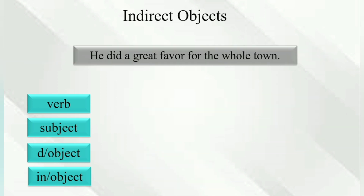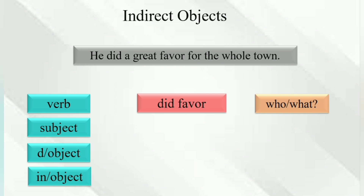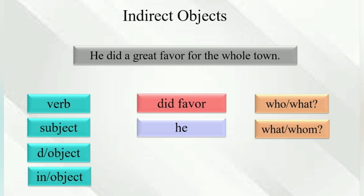'He did a great favor for the whole town.' The verb is 'did favor.' Who did favor? He. Did favor for what or whom? There isn't any object here, because 'did favor' is not an action verb, so there is nothing that receives the action.